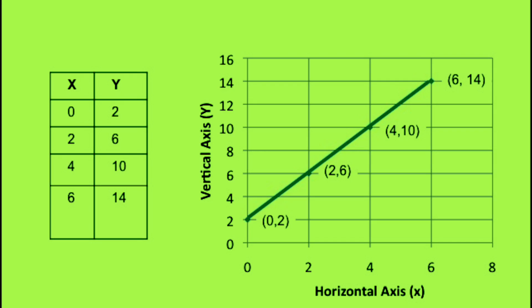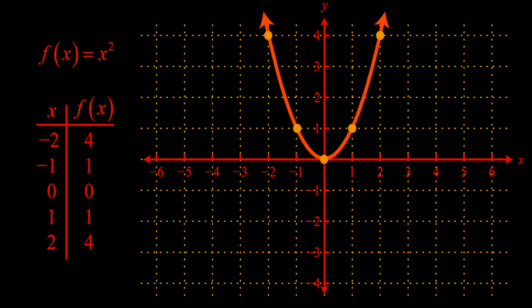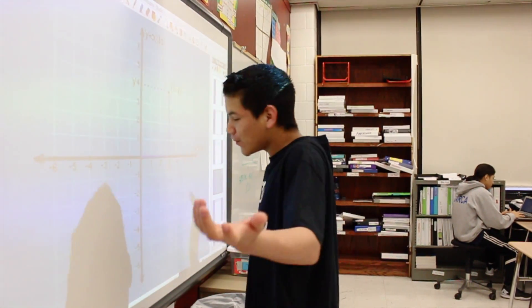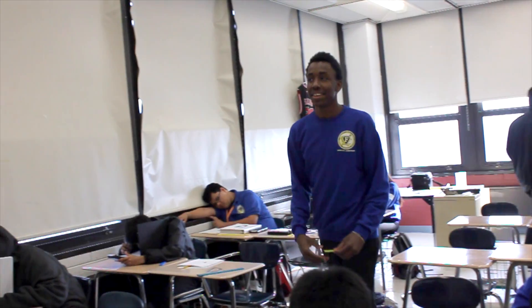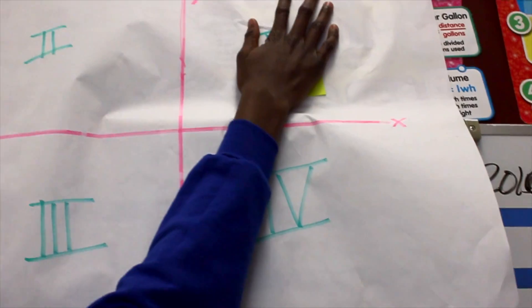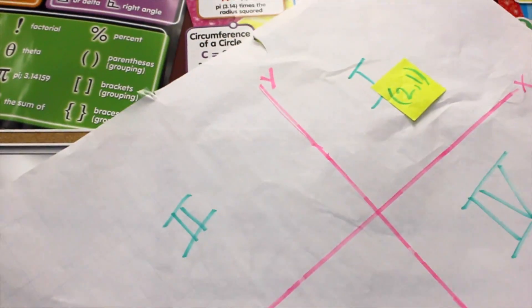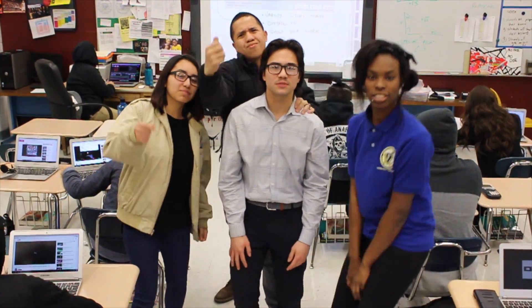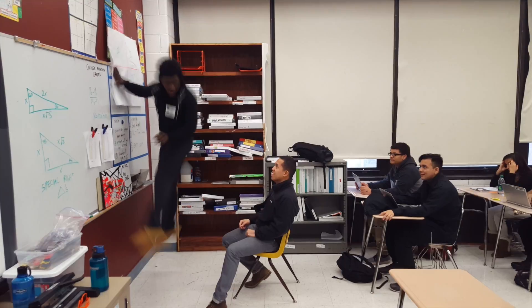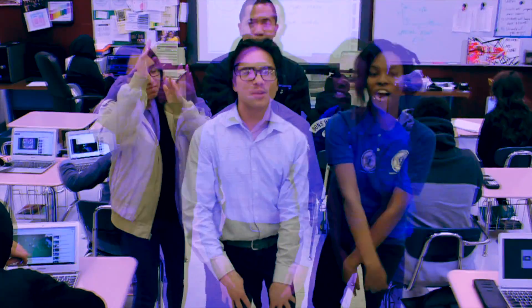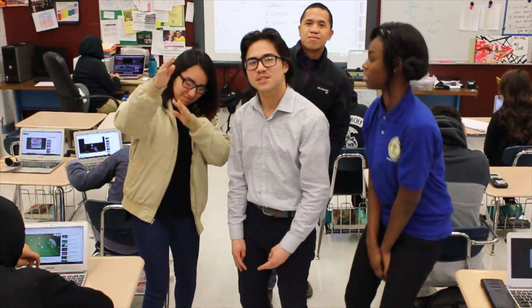Ordered pairs are a fundamental part of graphing. Ordered pairs make the functions on a graph. Now plot your points. Positive, positive — that's quadrant one. Negative, positive — that's quadrant two. When it goes negative, both negative — that's quadrant three. Positive, negative — that's quadrant four.